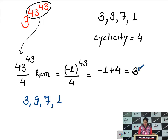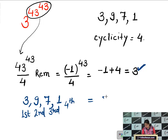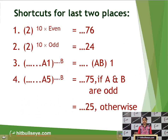A remainder of 3 does not mean 3 is the answer — it means we take the third place of the cycle 3, 9, 7, 1. Counting: first place is 3, second is 9, third is 7, fourth is 1. So the answer is 7.